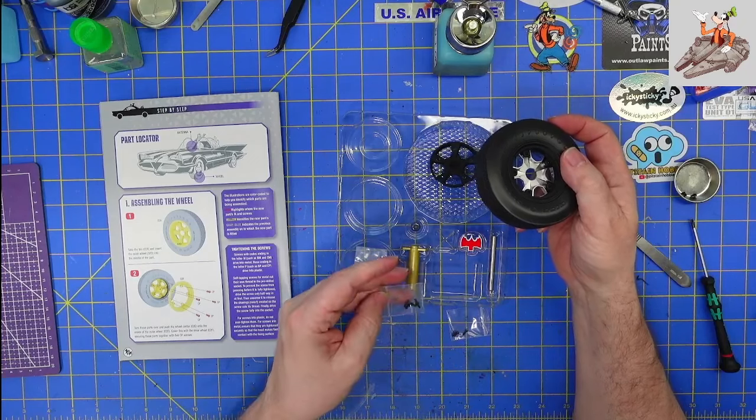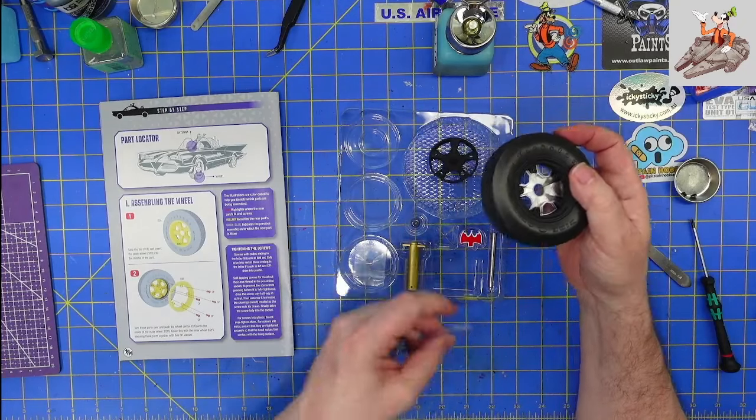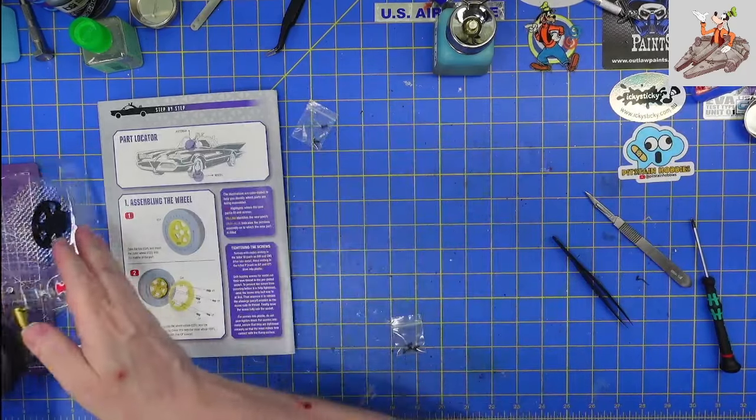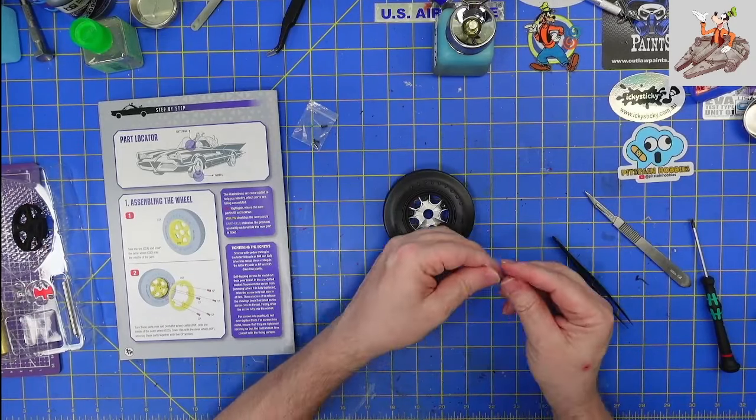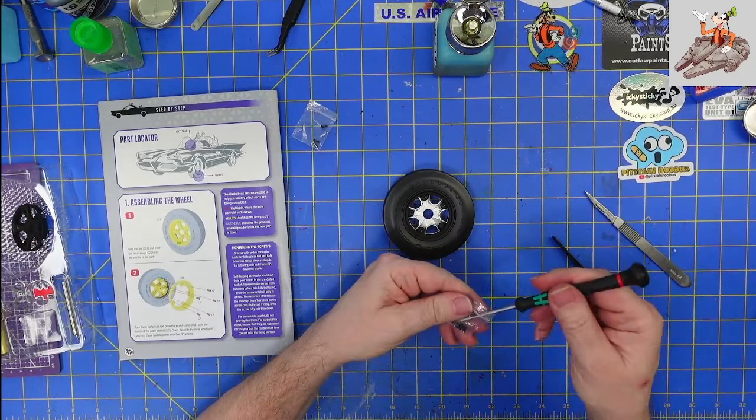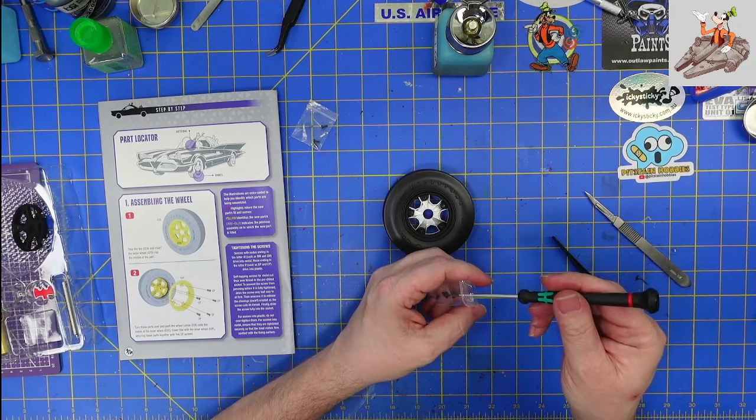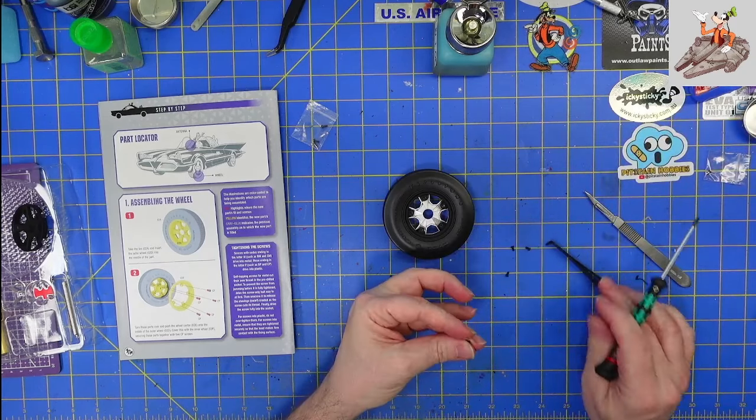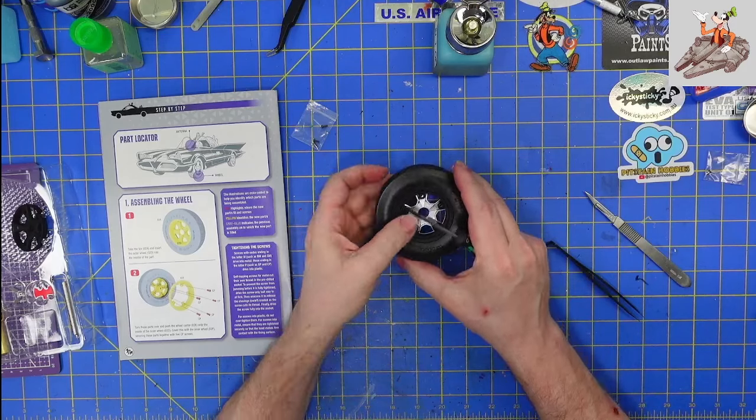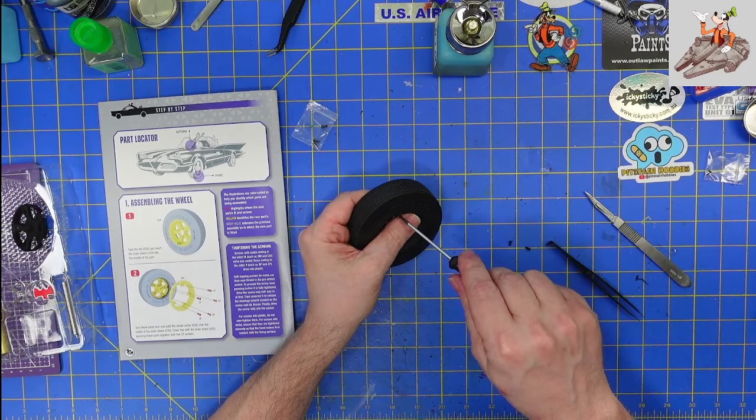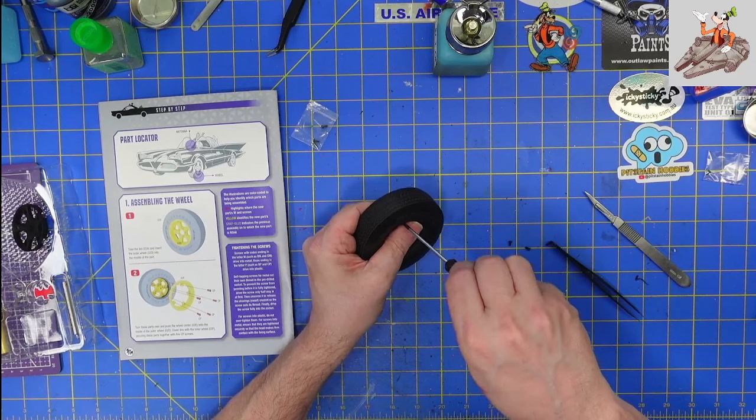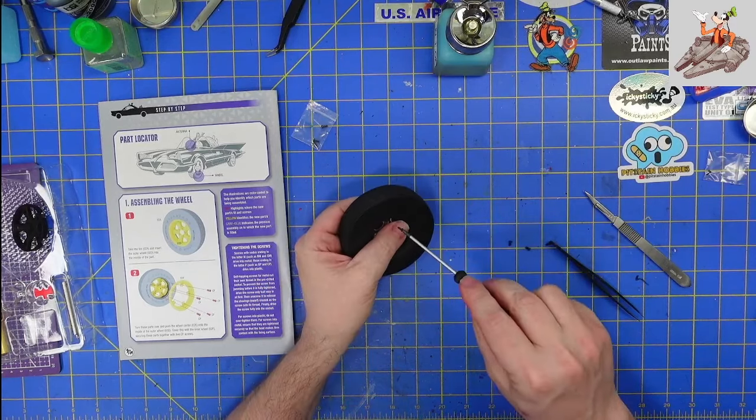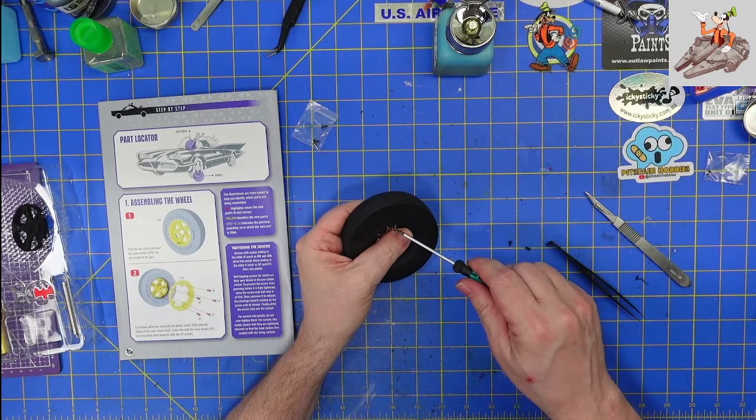We've got CP and EP screws. There's the EP. I have the AM screws from the last pack. So we're going to take five CP screws. Since they're P, they're going into plastic. And we're just going to put the screws through the metal piece into the plastic rim. We're going to go ahead and get all five of them started before I tighten them all the way down.